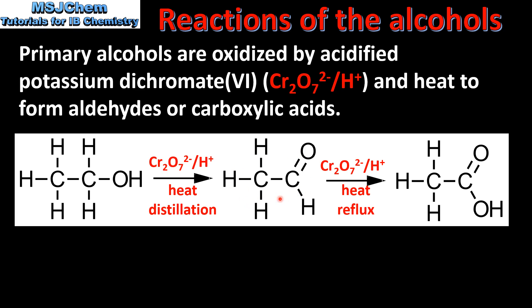If we continue to oxidize the aldehyde, again using the acidified potassium dichromate but this time with heat and reflux, we produce a carboxylic acid. So depending on the conditions used, we can oxidize a primary alcohol to an aldehyde — that's heat and distillation — or a carboxylic acid — that's heat and reflux. In both cases the oxidizing agent, acidified potassium dichromate, is the same.